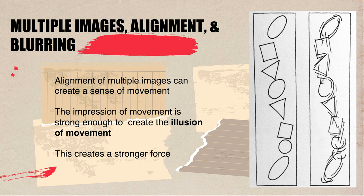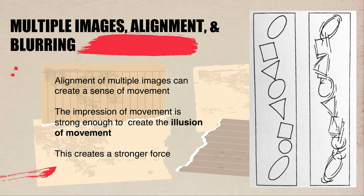Multiple images, alignment, and blurring can also create a sense of movement alongside tension. In the left image, objects that are similar — all basically a white object with a black outline — relate to each other, and given their misalignment they give a sense of toppling or wobbling back and forth. Taking it further with less stable, unclosed shapes and more action lines really adds to the dynamics and sense of movement, giving a sense of smoother but more pronounced motion.